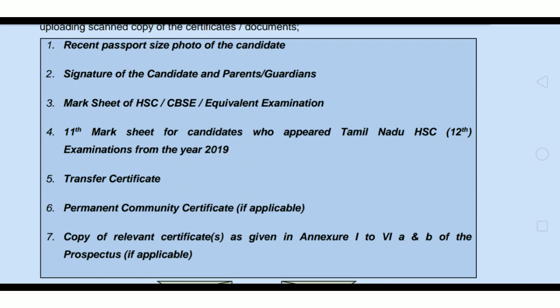That is the 7th point — copy of relevant certificates as given in annexure 1 to 6, A and B of the prospectus, if applicable. When you submit in annexure, the first certificate is the nativity certificate, with special category. Special category certificate, 7.5 reservations certificate. If you submit a sports category, sports certificate. If you submit a differently-abled certificate, it is a medical certificate. So put all this ready.